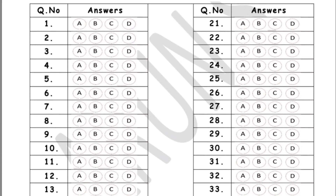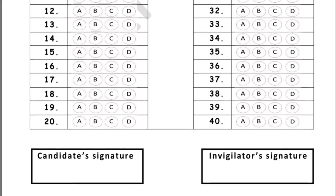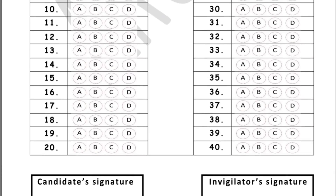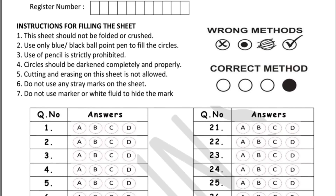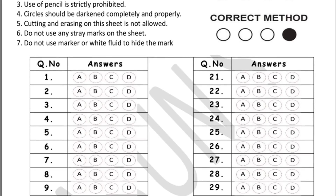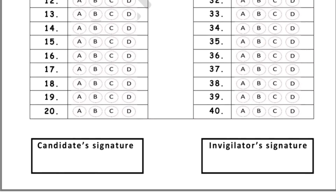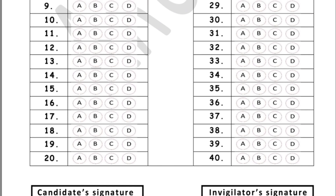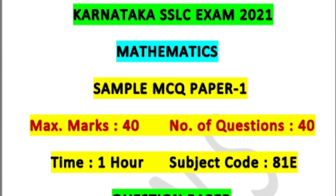For question number 1, if you think option A is the correct answer, shade option A completely using black or blue ballpoint pen only. Don't worry — complete instructions will be provided in the examination by the invigilator. Shade your chosen answer and don't skip any questions. If you find a question difficult, at least guess the answer — there are no negative marks. If your guess is correct, you gain one mark. Solutions will be posted soon; until then, try them out!